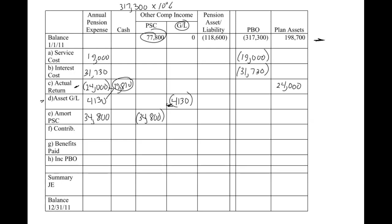Contributions are next, and then benefits. Remember, contributions are us funding the plan — we're cutting a check and sending money to the trustee who invests the money for us. Benefits paid — remember, benefits paid is the only thing that does not affect the summary journal entry. The trustee writes the checks, so it comes out of the plan assets, but it also reduces our obligation because we're meeting a portion of that obligation.